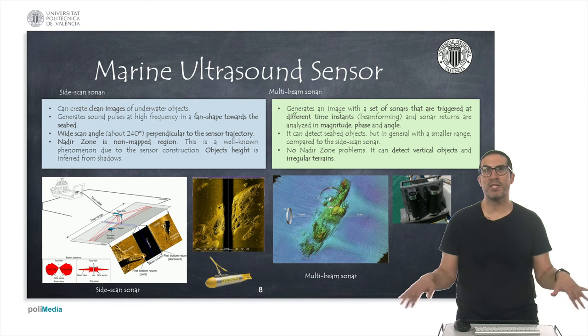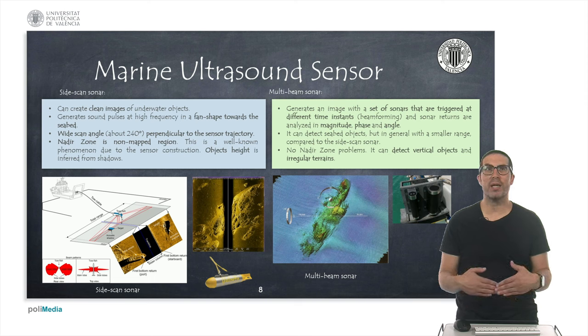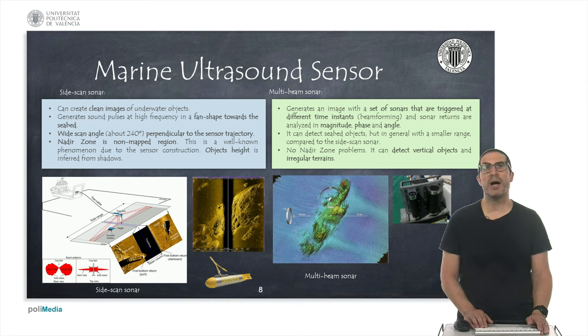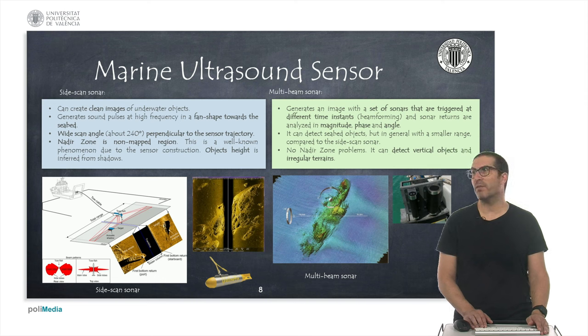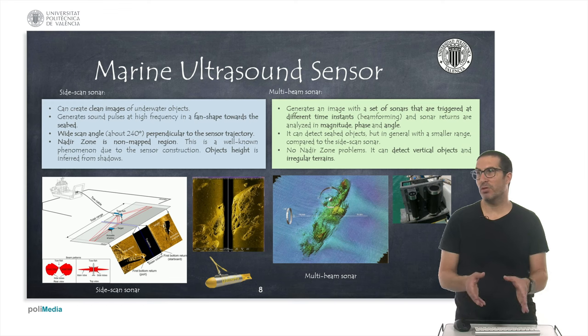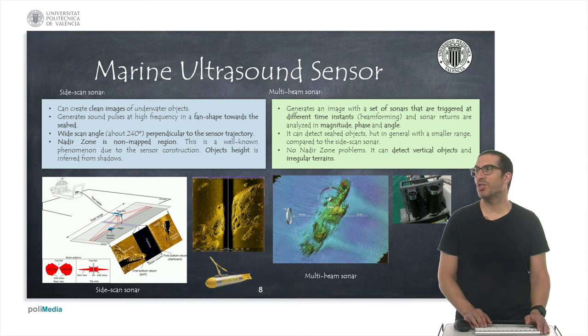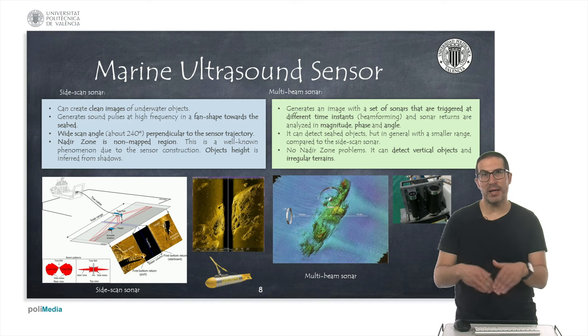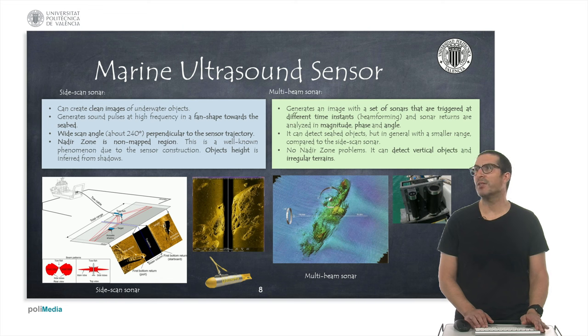It generates a wide image that can be built by dragging the sensor along a trajectory. And these kind of sensors have an area which is known as nadir zone in which the sensor cannot detect because of the way they are built. And in general with these kind of sensors we can infer the height of objects with the shadows, but we only have one single scan spread on a wide direction and the height is not necessarily properly estimated.